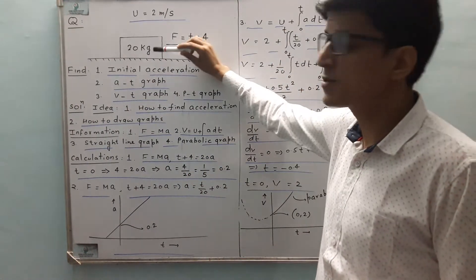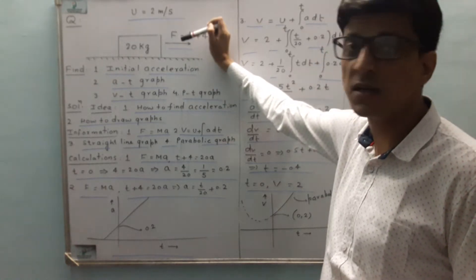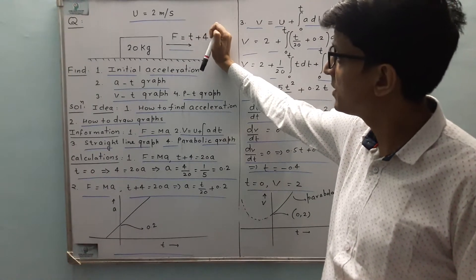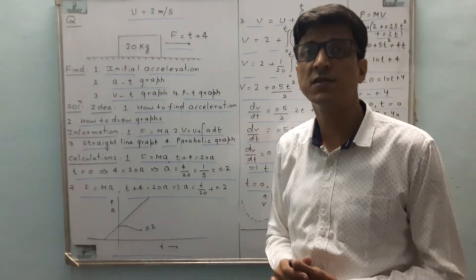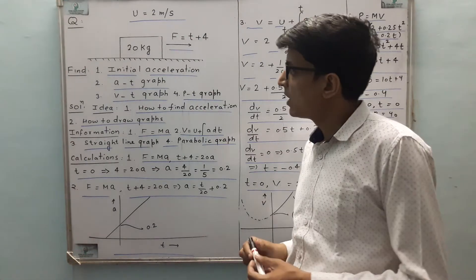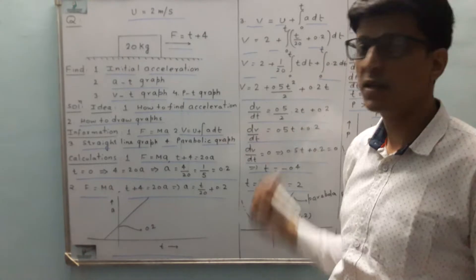The question says that there is a block of mass 20 kg placed on a surface, given an initial velocity of 2 meters per second, and a force acting on it which is t plus 4. The force is time dependent. We need to find the initial acceleration, a-t graph, v-t graph, and p-t graph.